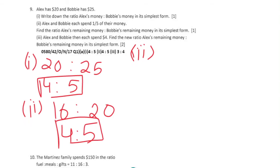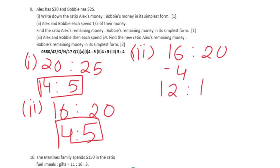Actually, the simplified ratio is 12:16 — wait, divide both sides by 4 and we're left with 3:4.